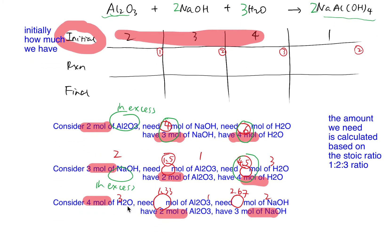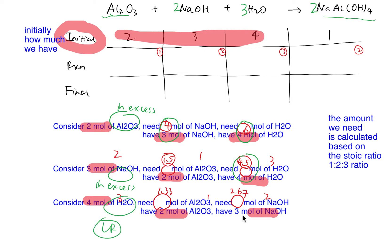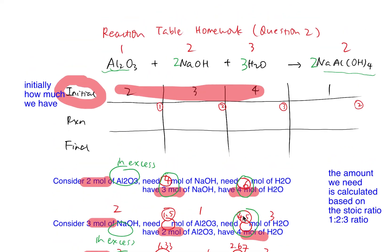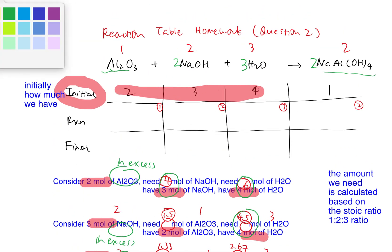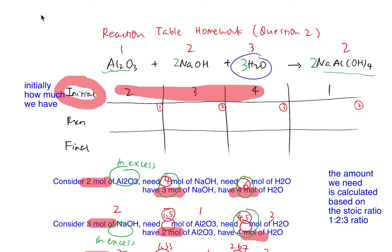For the last consideration, we just need to look at water. We need 1.33 moles of aluminium oxide but we have two — more than enough. We need 2.67 moles of sodium hydroxide and we have three — also more than enough. Therefore water is the limiting reagent. So we come back to the question and label it with a big circle: limiting reagent. That's one way to decide which one is the limiting reagent.